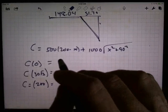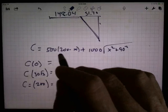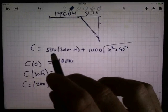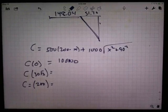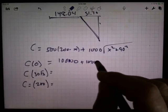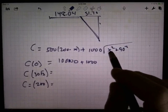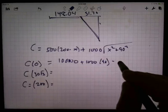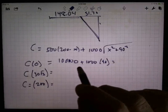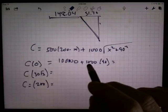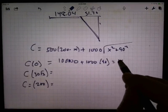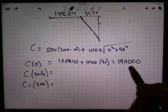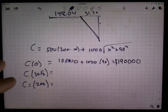and so we're going to figure out what these are. When I plug a 0 in here, I get a cost of, well, this would be 100,000, plus 1,000 times 90. So, that would be 1, 9, 0, 0, 0, 0 dollars. That's what you get when you plug 0 in.